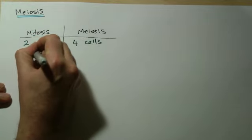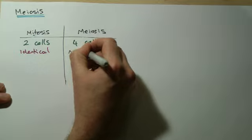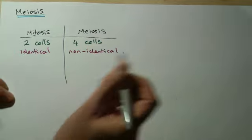Mitosis, the cells are identical, whereas in meiosis, they're non-identical, and we'll see why that matters in a second.